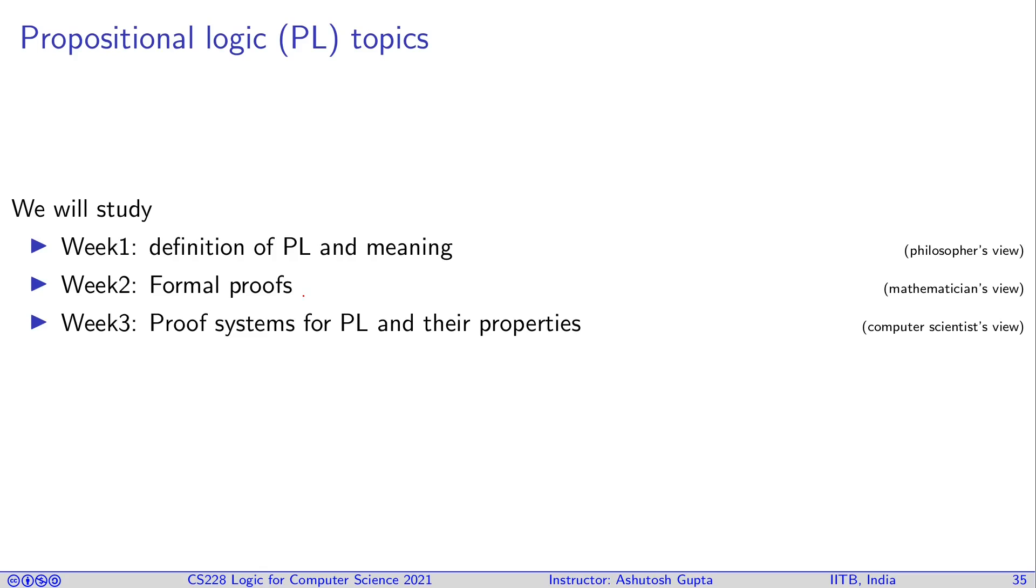You want to understand how difficult it is to write proofs. Can we write using more concise form? Can we automate them? Can we algorithmize them? All those questions computer scientists will ask. So that will be handled in week three.